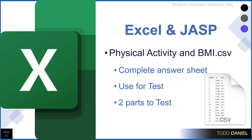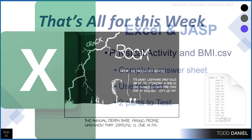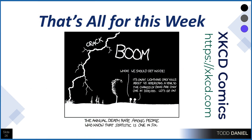Finally, on the test you will be given a dataset called 'physical activity and BMI.csv.' You can open this in either Excel or JASP and complete an answer sheet that has been provided in Blackboard. You will take your answers written on your answer sheet and complete part of the test using those answers. The first part will be a traditional true-false and multiple-choice test, but the second portion will involve writing in the answers you got from your own analysis. I hope this video will be useful as you prepare for the second unit test or as a review. Thanks for watching.